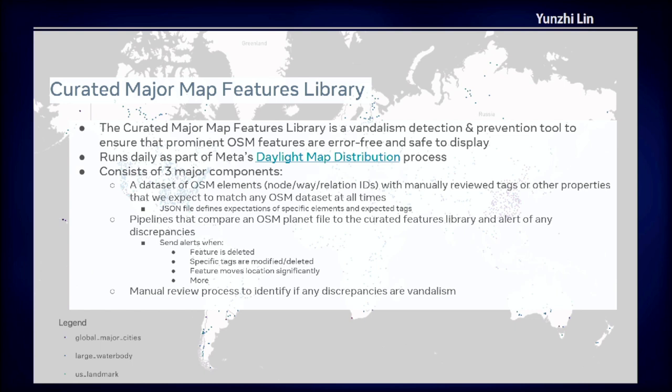First, it's a dataset in JSON file format of OpenStreetMap elements with manually reviewed tags and other properties that we expect to match any OSM dataset at all times. Second, it has a pipeline that compares the library with OSM planet files and alerts us to any discrepancy. Lastly, it involves a manual review process to identify any discrepancy or vandalism.